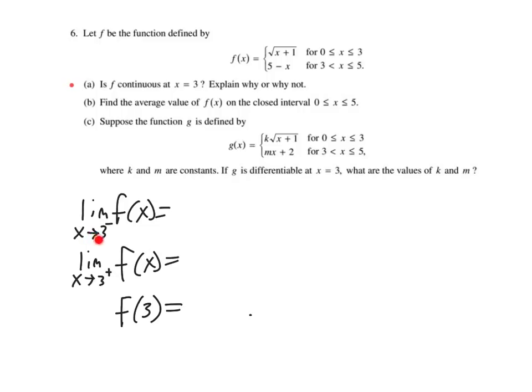The limit as x approaches 3 from the left. So that means we're going to be using this function because this is exactly 3 or any value to the left. And the number we get out there is as x approaches 3, we get 3 plus 1 is 4. Square root of 4 is 2.